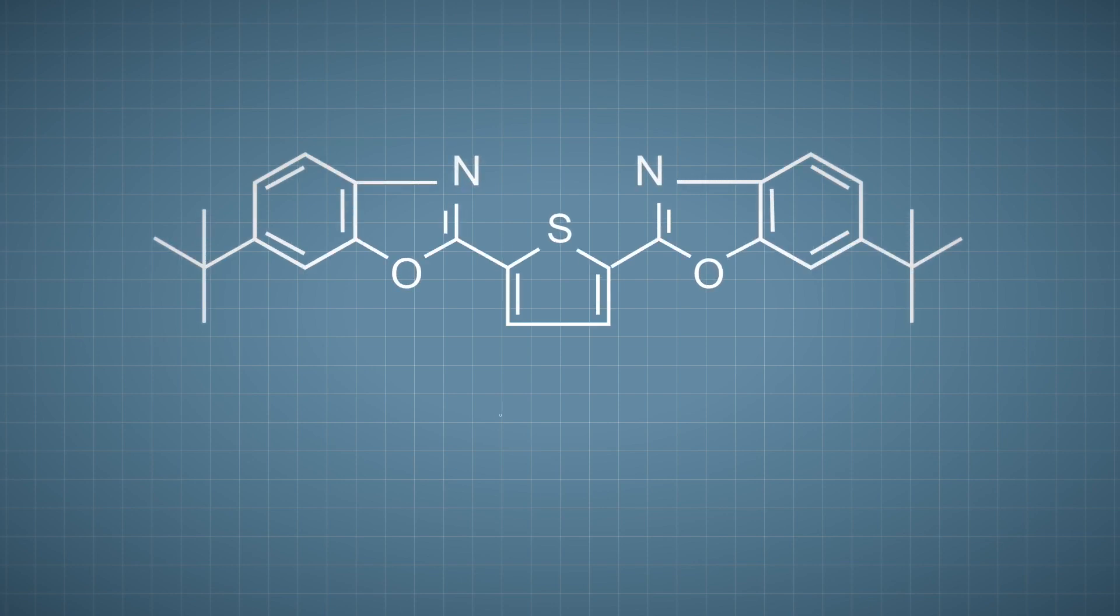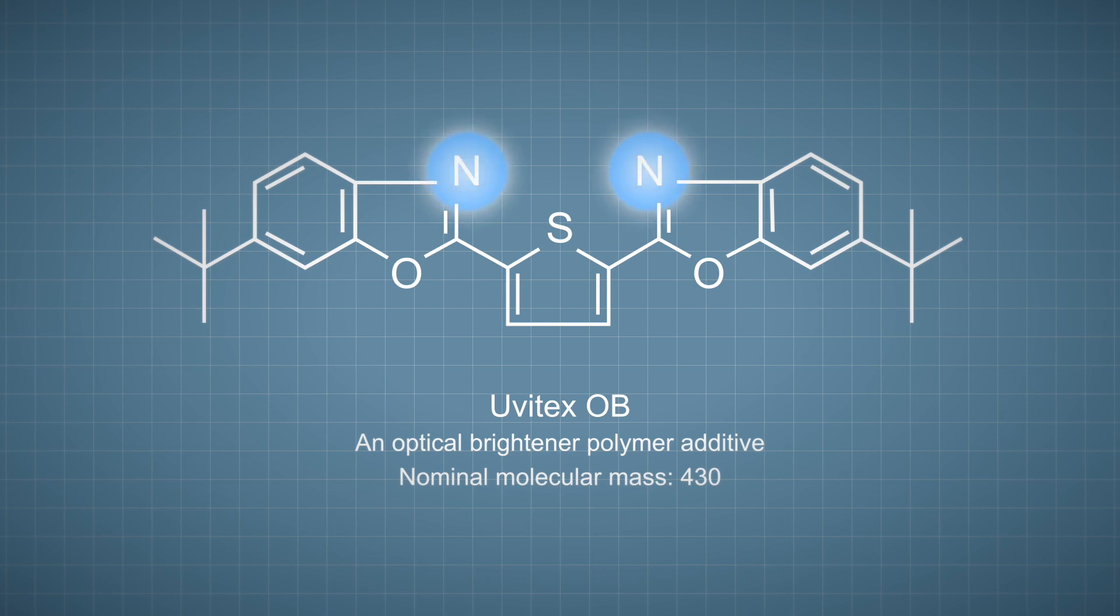In the adduct ion video we looked at the example of Uvitex OB, an optical brightener polymer additive. Uvitex OB has a nominal mass of 430 that contains two nitrogen atoms, two oxygen atoms and one sulfur atom. All five atoms could be the place where a cation could bond with a molecule but in practice other factors such as relative basicity of each atom and or any steric hindrances also come into play.